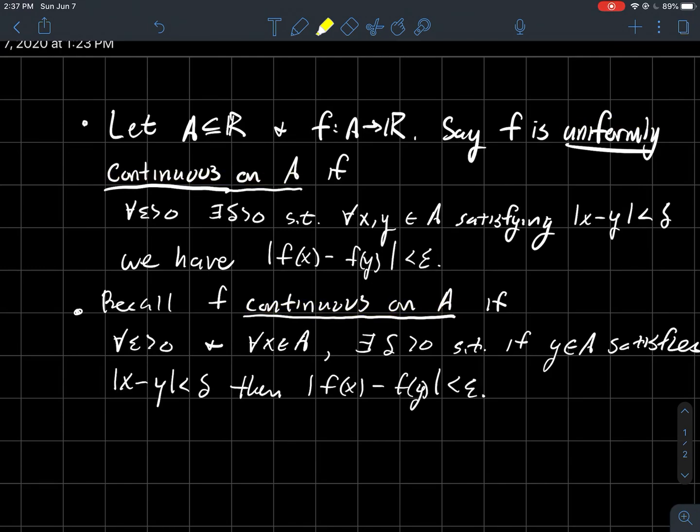So the big thing is, notice here, for every epsilon, there exists a delta. And so notice the order that we wrote these symbols in, that delta only depends on epsilon. It doesn't depend on where you are in your domain. So this one delta that depends on epsilon, it should work for any two points in your domain that are that close to each other.